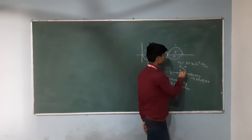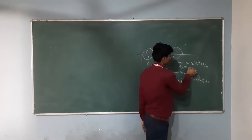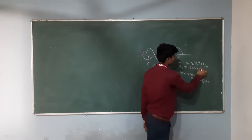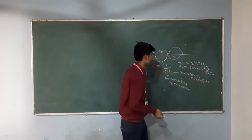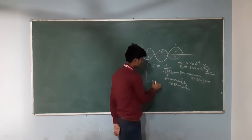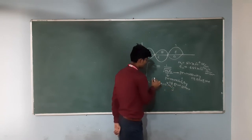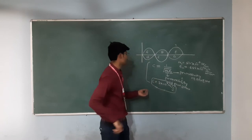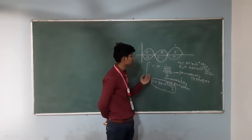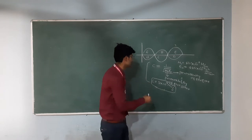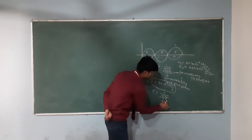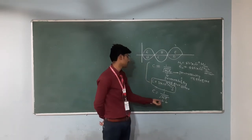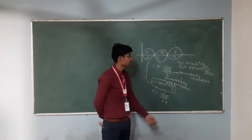For ε₀, the value is 8.85 × 10⁻¹² coulomb squared per newton meter squared. ε₀ is related to the electric field. By using these two constant values, we can find out the velocity of light: C equals 3 × 10⁸ meters per second in free space. If you want to pass the light into a medium, then the velocity can be written as C equals 1 divided by the square root of με, where μ indicates the permeability of the medium and ε indicates the permittivity of the medium.